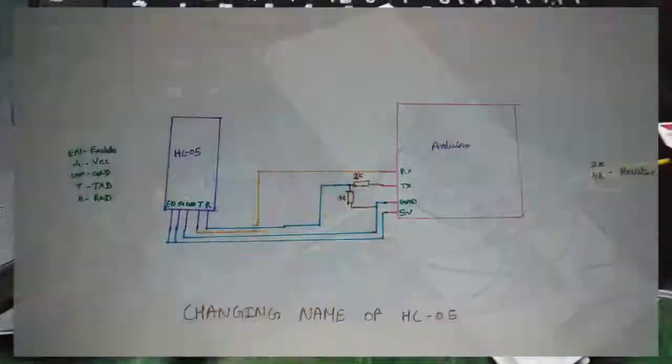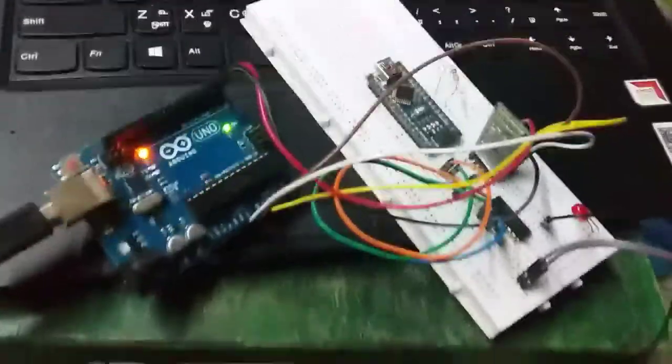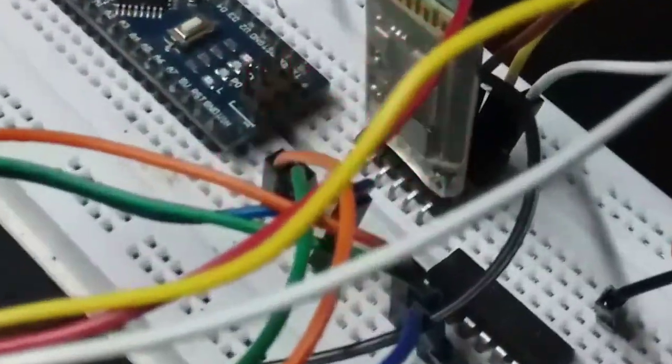First, we will have a circuit diagram on the screen. Here we will have a connection. We will be able to connect with Bluetooth.